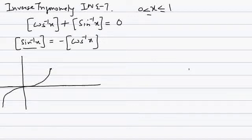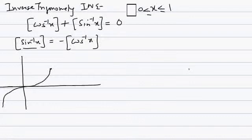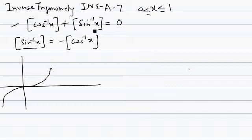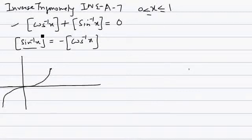This is inverse trigonometric function INA question 7. In this question, we have to solve this equation: the greatest integer of cos inverse x plus the greatest integer of sin inverse x equals to 0, for non-negative values of x, that is, x is greater than or equal to 0. We have to find the values of x that satisfy this equation.